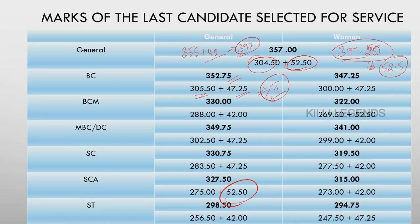If you look at the candidate for 305, we will pass in the final selection. Of course the mark is 300. In the interview with 52 — what does it do? In June of the interview, the number is 52 — they are more than 352.